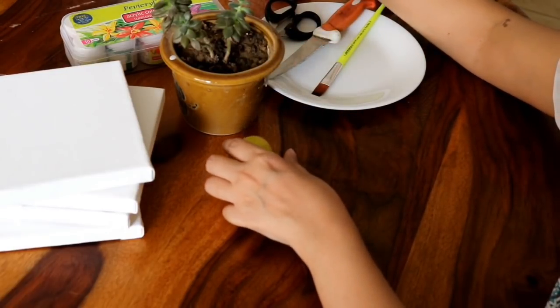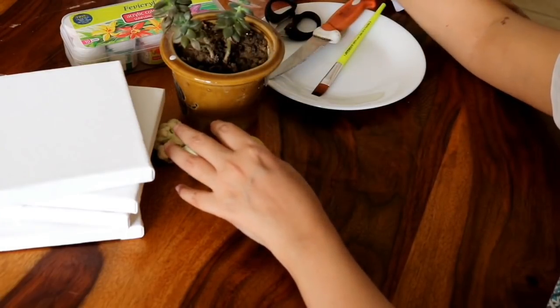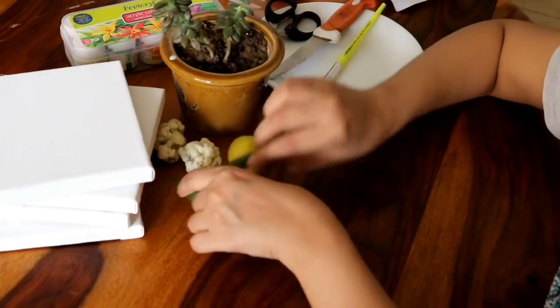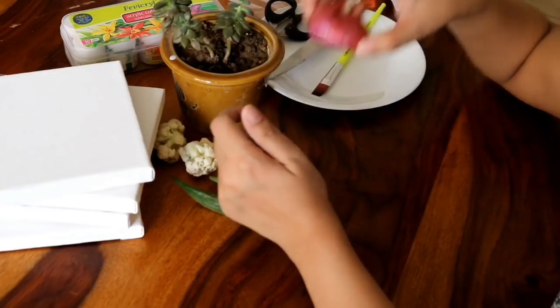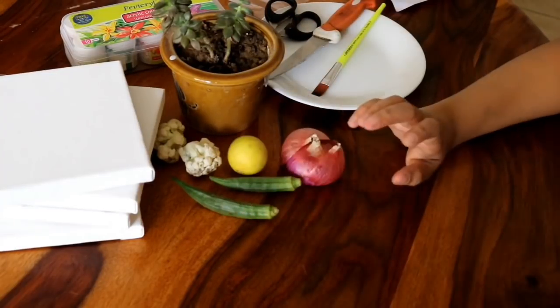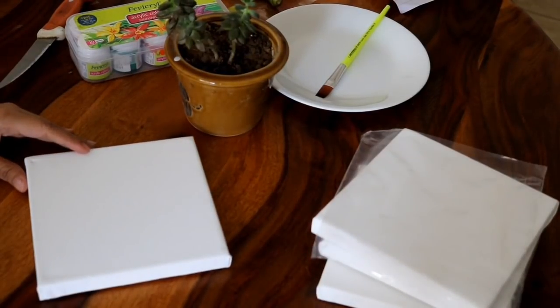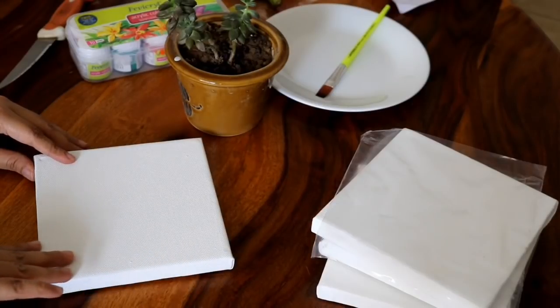you will need some vegetables which are easily available in your home. Like two florets of okra. I have bought a lemon. There are two pieces of onion. And in this case, you will need one piece of cauliflower. You will also think that I have to sit with some vegetables. But in the future, you will see how interesting a wall art will be made from these vegetables.